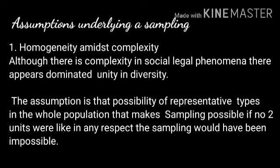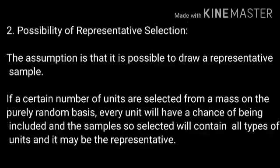There are certain assumptions underlying sampling. The first assumption is homogeneity amidst complexity — although there is complexity in social-legal phenomena, there is unity in diversity. The assumption is that there is a possibility of representative types in the whole population, which makes sampling possible. If no two units were alike in any respect, sampling would have been impossible. The second assumption is the possibility of representative selection — if units are selected from a mass on a purely random basis, every unit will have a chance of being included, and the sample will contain all types of units and be representative.